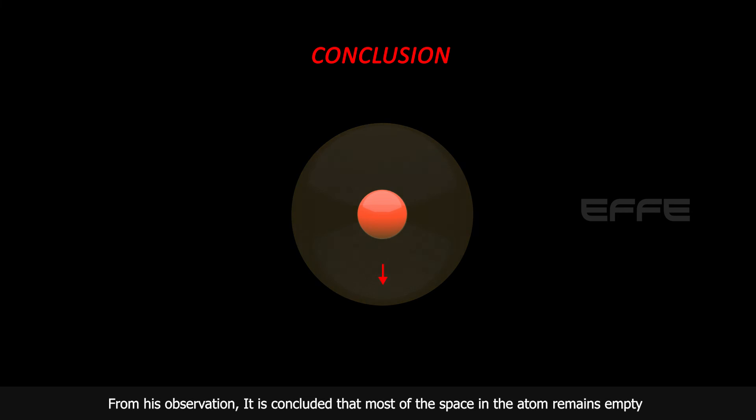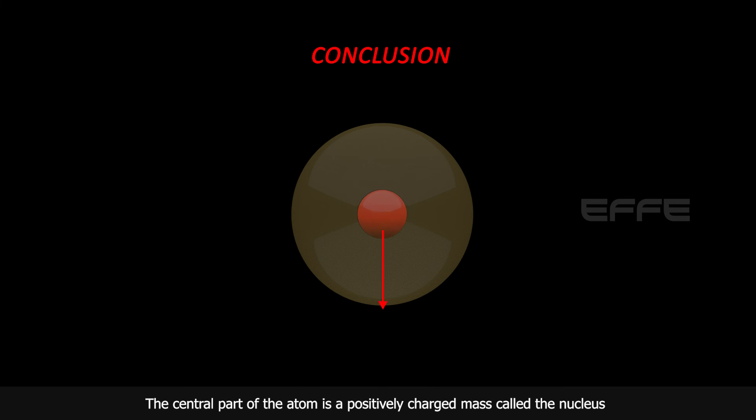From his observation, it is concluded that most of the space in the atom remains empty. The central part of the atom is a positively charged mass called the nucleus, which scatters the alpha particles.